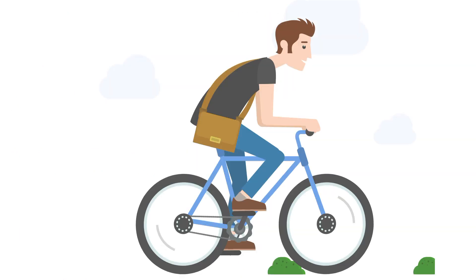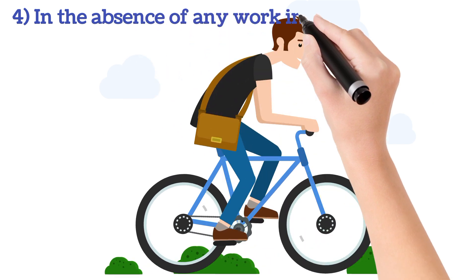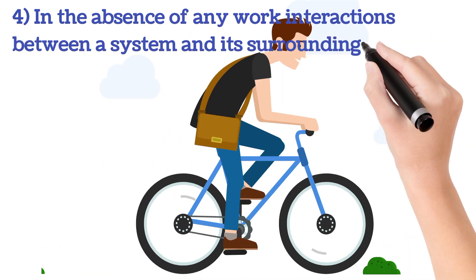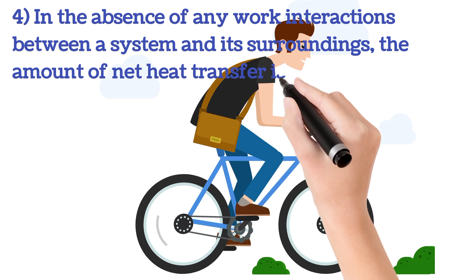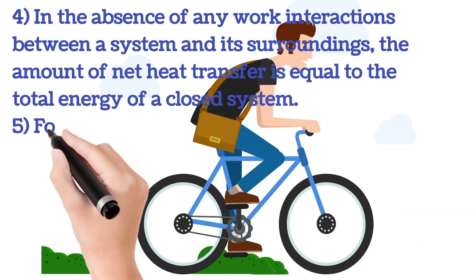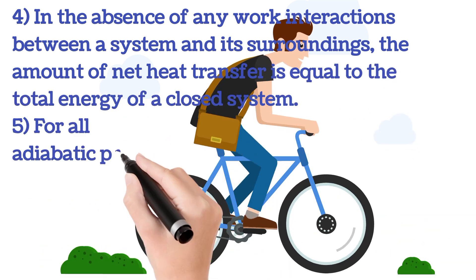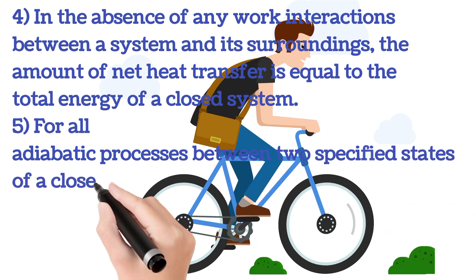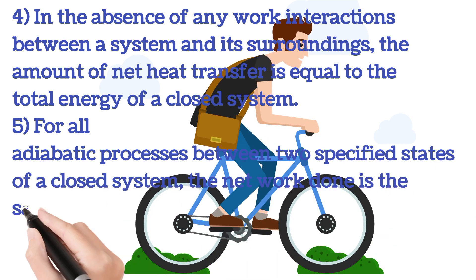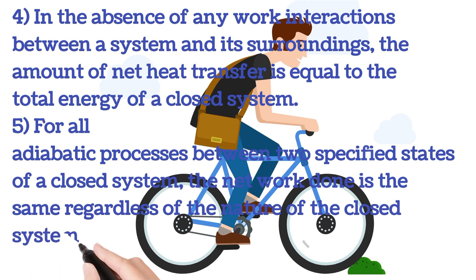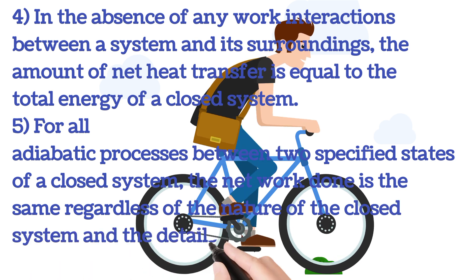Number four: in the absence of any work interactions between a system and its surroundings, the amount of net heat transfer is equal to the total energy of a closed system. Number five: for all adiabatic processes between two specified states of a closed system, the net work done is the same regardless of the nature of the closed system and the details of the process.